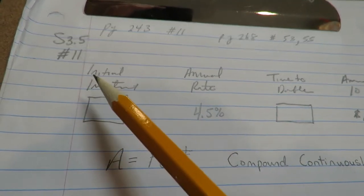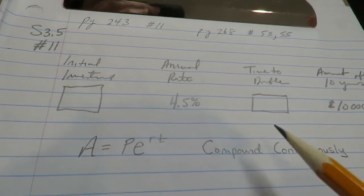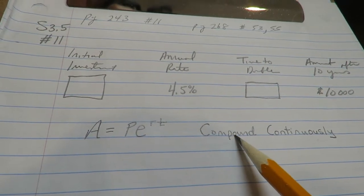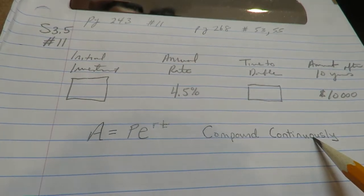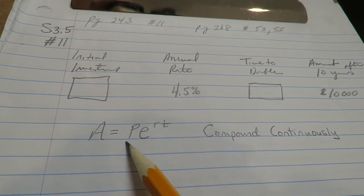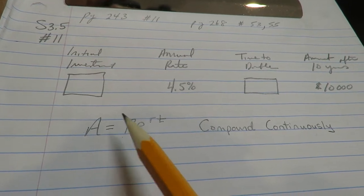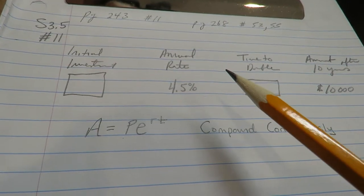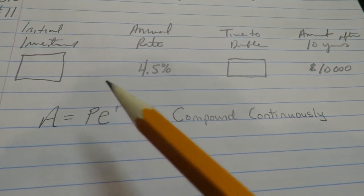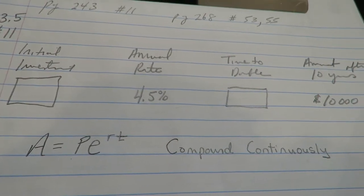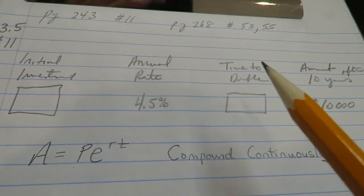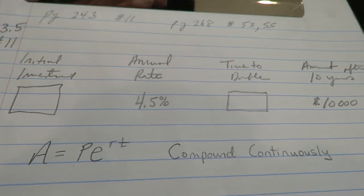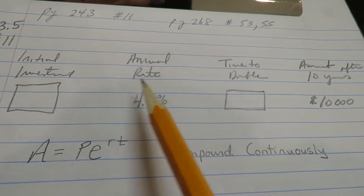Okay, section 3.5 number 11. We're doing a money problem now. They told us in the question compound continuously, so that means we're going to use this equation. This one is difficult because they're not giving it to us in the standard way. This isn't done like how we would first find the initial condition and then r. It's not done this way.